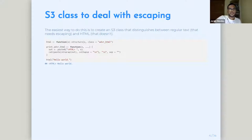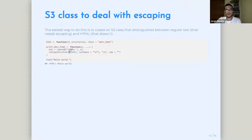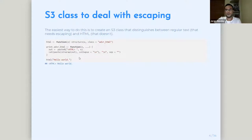To do the escaping, the easiest way is to create an S3 class, so we can make the distinction between regular text that needs to be escaped and HTML text that doesn't. First, we create an HTML function — HTML class — just like a function of the structure HTML. We can create a print method that gets the text and pastes it with an HTML label. So if I use the HTML 'hello world', I get an HTML hello world printed out — just like the SQL example, it just puts something in the print method.